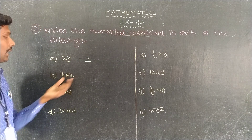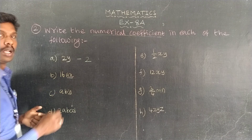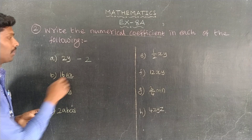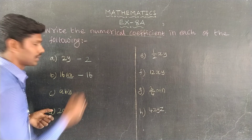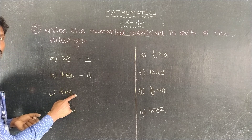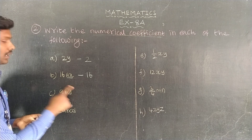16ax is a variable. This is a numerical coefficient — 16. a, b, y: only the variable part is the variable. If you call it a numerical coefficient, the number is separate from the variable.